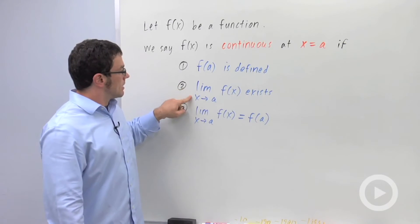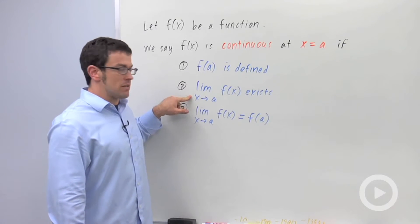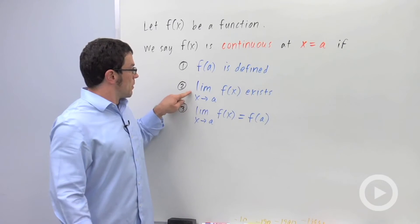Second, the limit as x approaches a of f of x exists. So the limit has to exist from both sides.